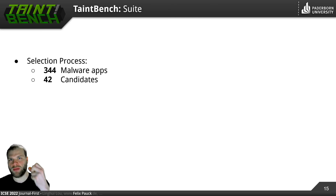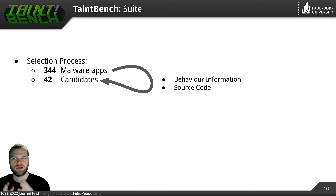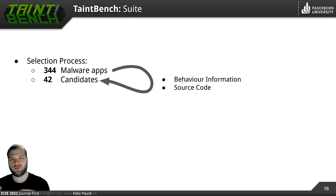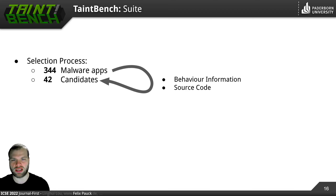We had two major contributions along with our study considering TaintBench. The first is the TaintBench suite. We started with more than 300 malware apps and then came down to 42 candidates. To reduce the number, we considered behavioral information if it was available and sensible to use in that context. We basically needed the information if this type of malware actually leaks information — so if it comprises any taint flows — and we required the source code to be available or at least in a decompilable state.